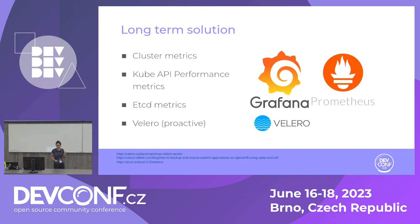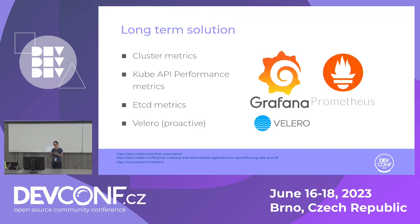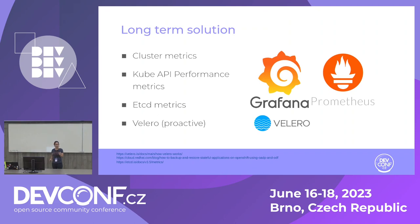The long-term solution for this kind of performance issue is cluster metrics. You want to make sure you have them and that you understand what is normal for the cluster. Kube API performance metrics are great to have — available in Grafana dashboards, which is pretty much the best friend of any Kubernetes administrator. etcd metrics are also super important; in OpenShift you have both API performance metrics and etcd metrics by default. I also want to briefly add Velero — how many of you know Velero?